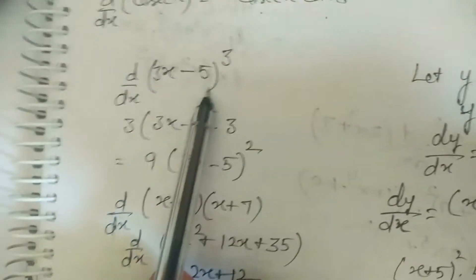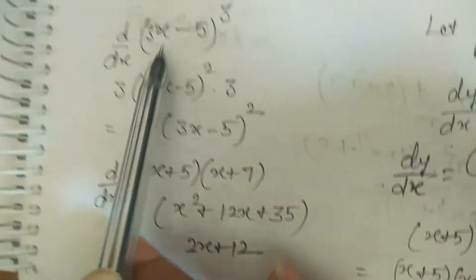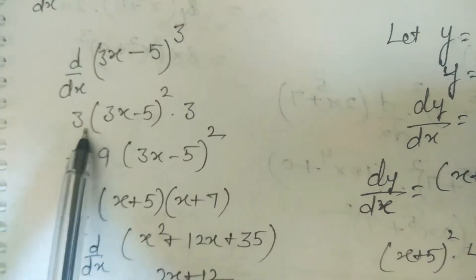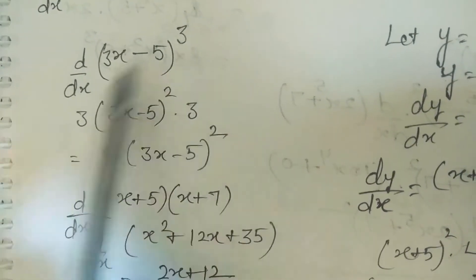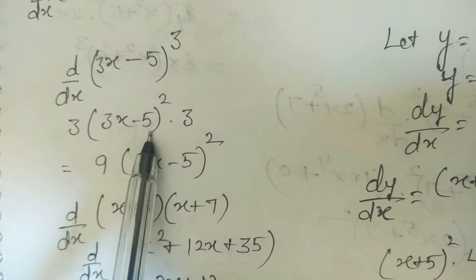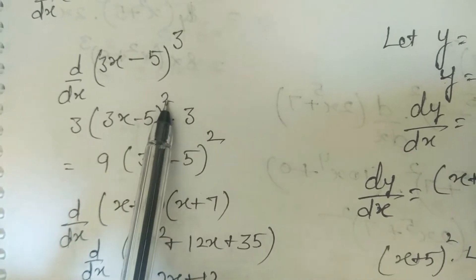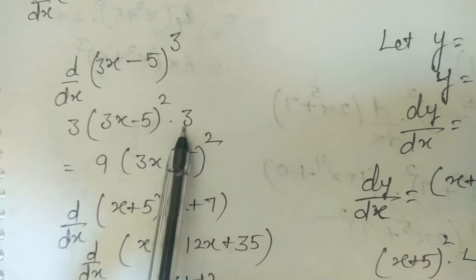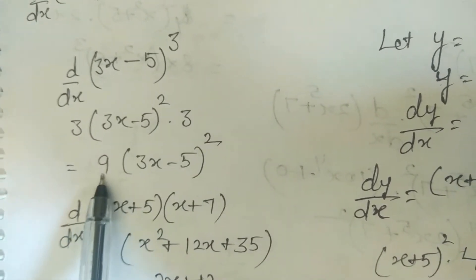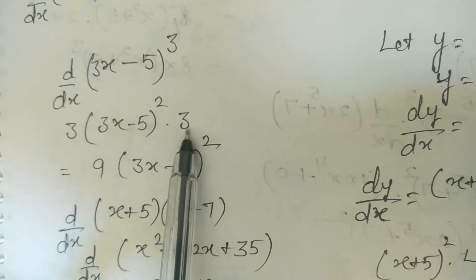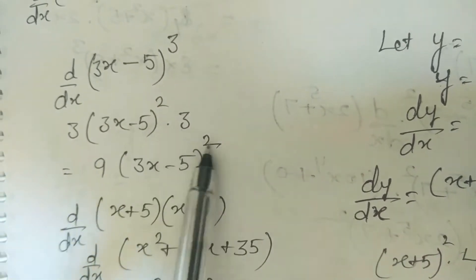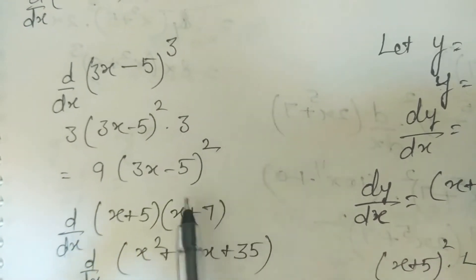One more example: derivative of (3x−5)^3. We get 3·(3x−5)^(3-1)·3 = 9·(3x−5)².